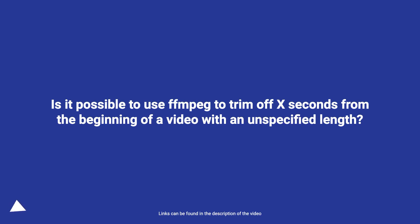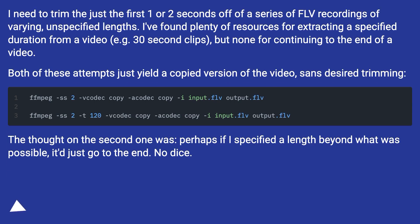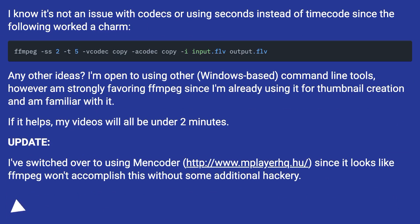Is it possible to use FFmpeg to trim off X seconds from the beginning of a video with an unspecified length? I need to trim just the first one or two seconds off a series of FLV recordings of varying lengths. I found plenty of resources for extracting a specified duration — for example, 30-second clips — but none for continuing to the end of a video. Both attempts just yield a copied version of the video without the desired trimming. The thought on the second one was that specifying a length beyond what was possible might cause it to go to the end, but no dice.